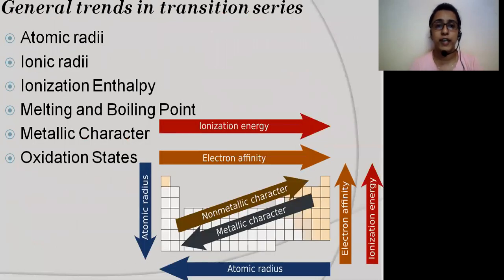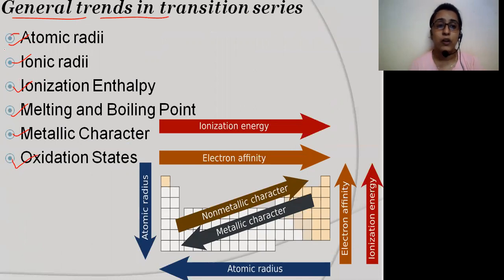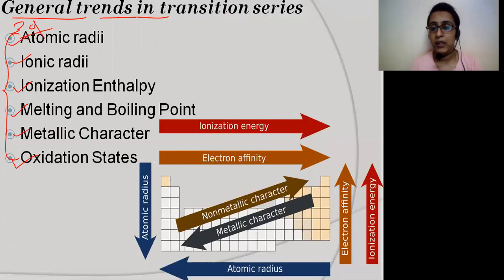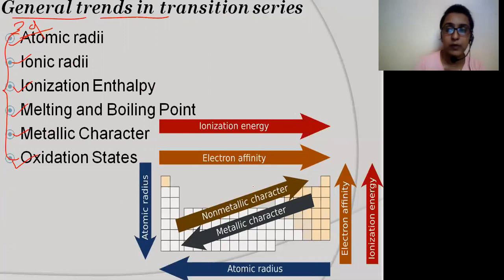Now we will look at general trends in the transition series — atomic radii, ionic radii, ionization enthalpy, melting point, boiling point, metallic character, and oxidation state — particularly for the 3D series, the first transition series.